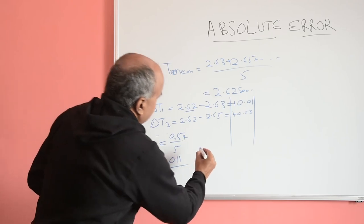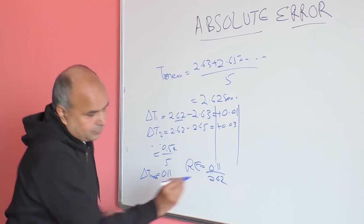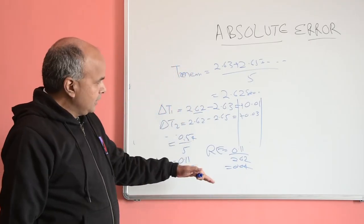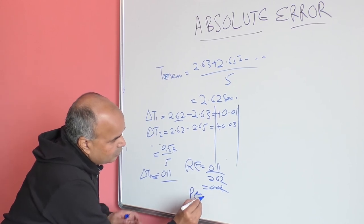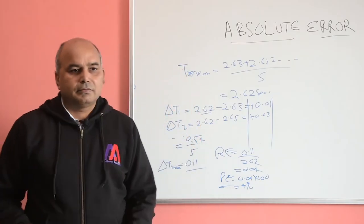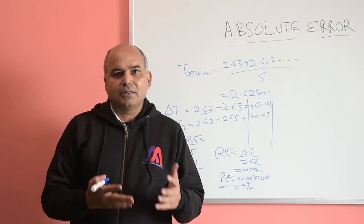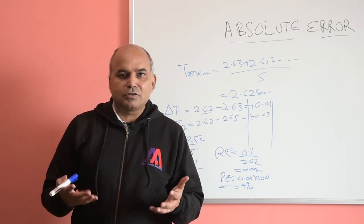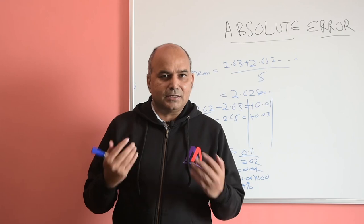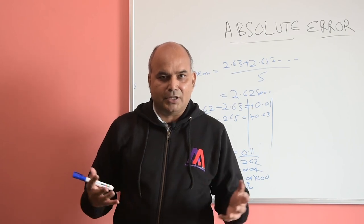To calculate the relative error: 0.11 / 2.62 = 0.04. Converting to percentage error: 0.04 × 100 = 4%. This is how you calculate the mean value, absolute error, relative error, and percentage error. I hope this lecture helps you solve problems. Thank you very much and keep watching Adesh Academy.